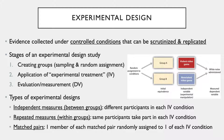Lastly, in a matched pairs design, one member of each matched pair is randomly assigned to one of the IV conditions. The pros are that it reduces participant variables because they're already matched to be similar, and it avoids order effects so counterbalancing is not necessary. The cons are that it's time-consuming and it's almost impossible to match participants exactly unless they are identical twins reared together.